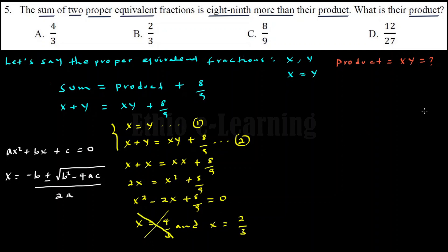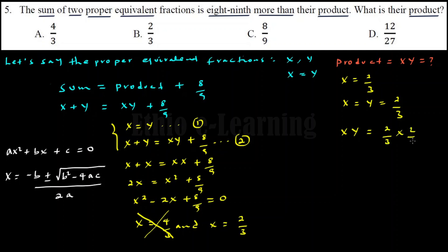So the proper equivalent fractions give us x equals y equals 2 over 3. The product is x times y, which equals 2 over 3 times 2 over 3, which equals 4 over 9. That is not the expected answer, but the product of the two proper equivalent fractions is 4 over 9.